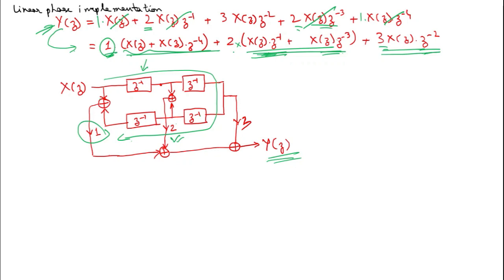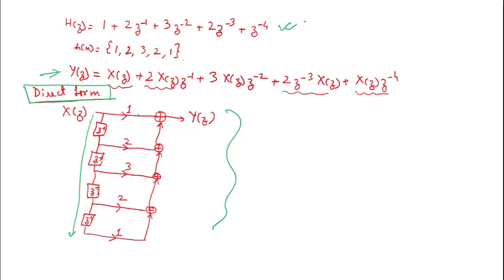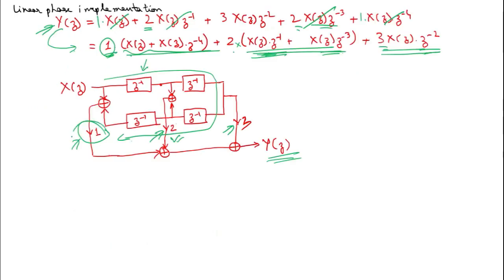The advantage of linear phase implementation is reduced number of multiplications. In the direct form there were 5 multiplications; in the linear phase implementation there are only 3. So computational complexity is reduced to a certain extent.